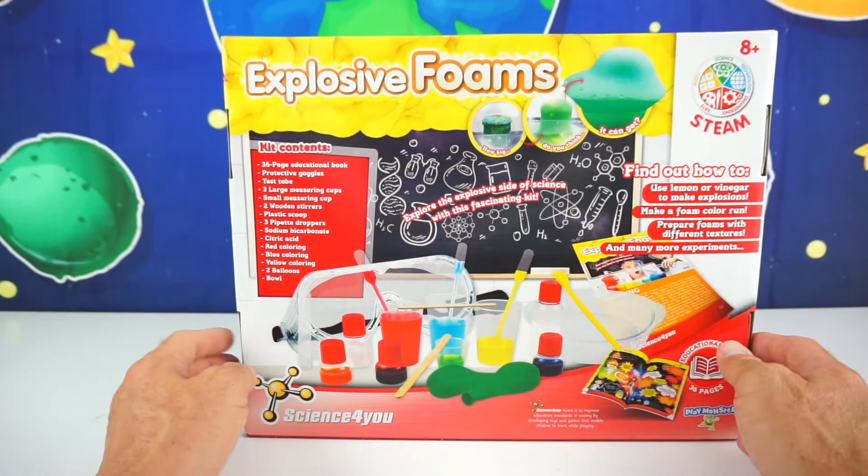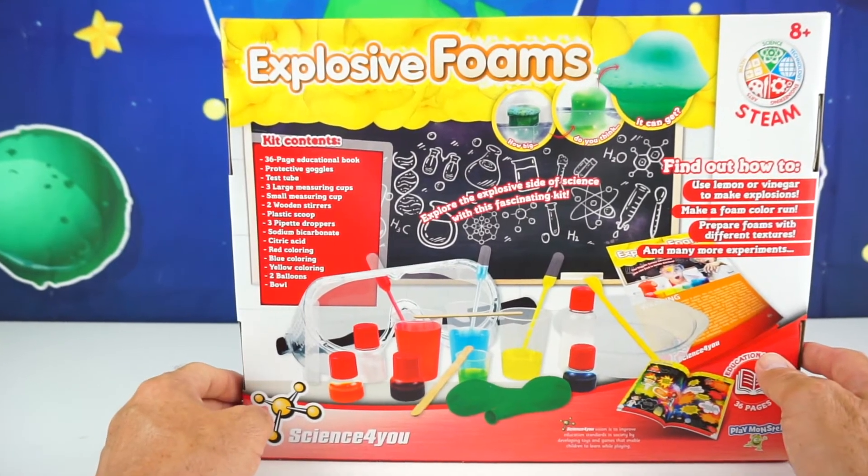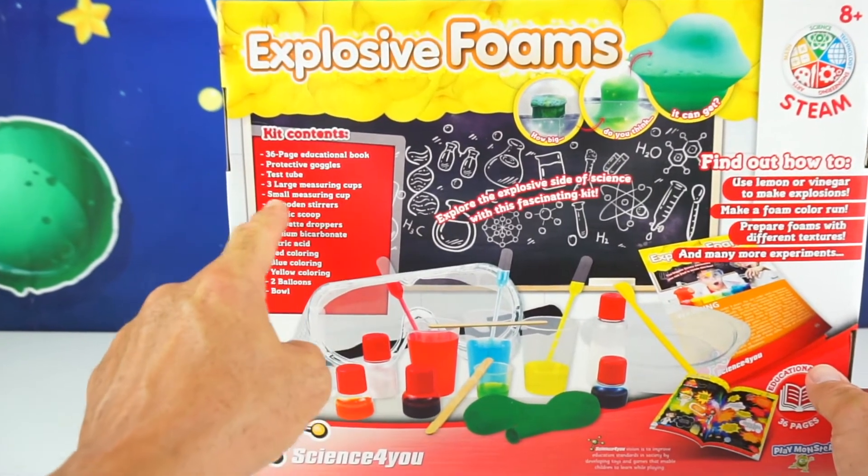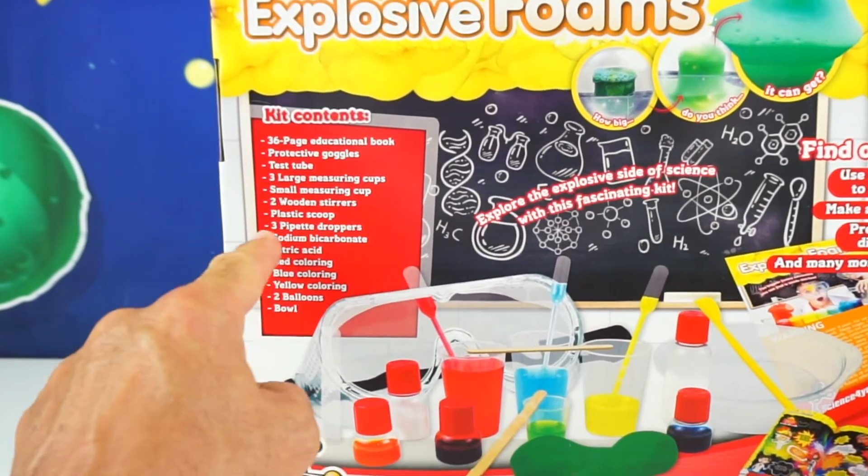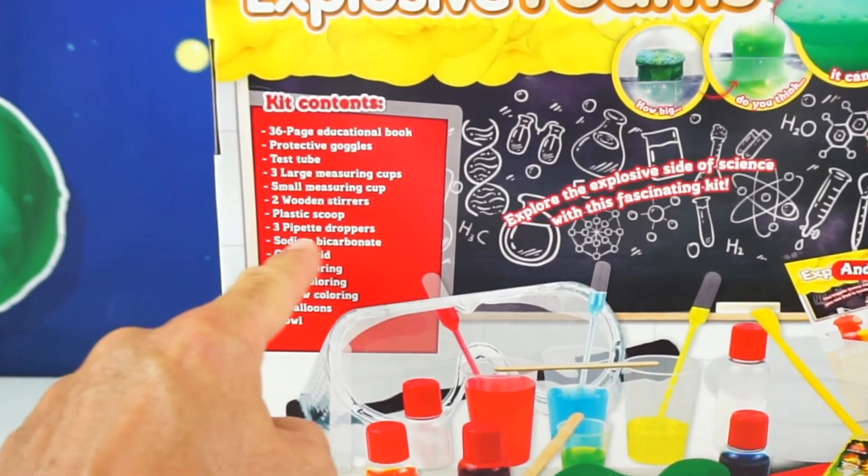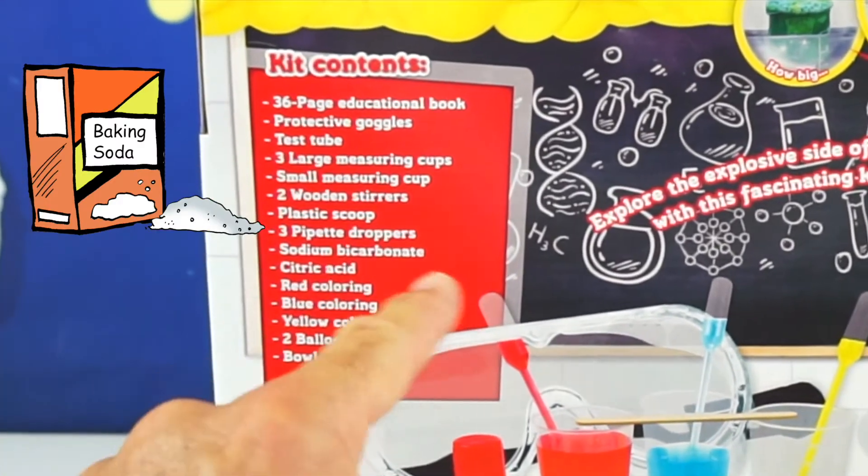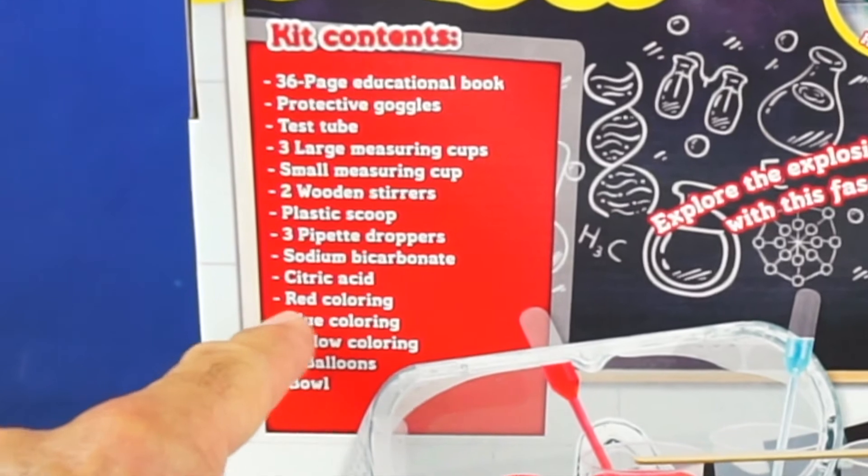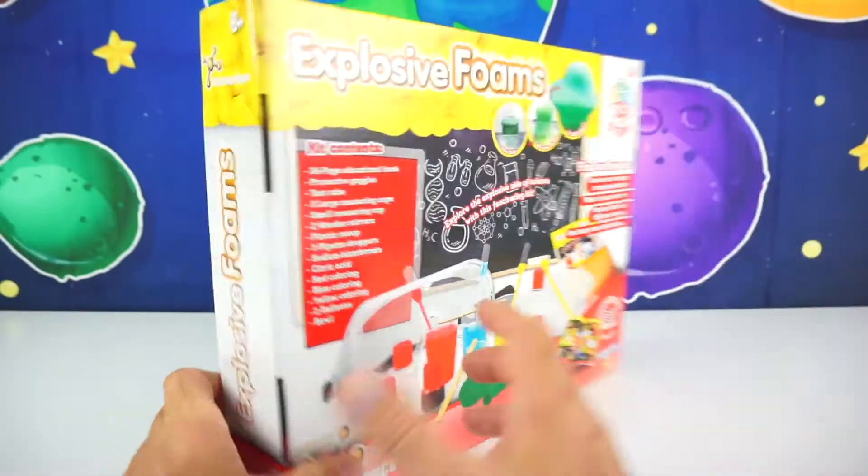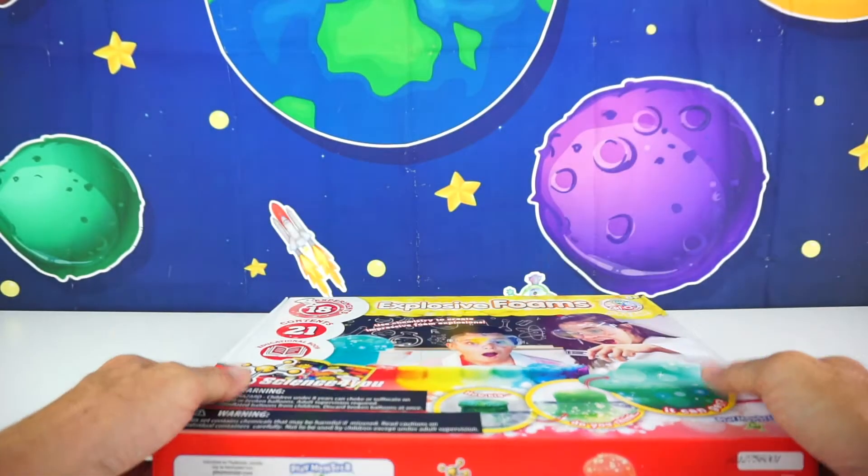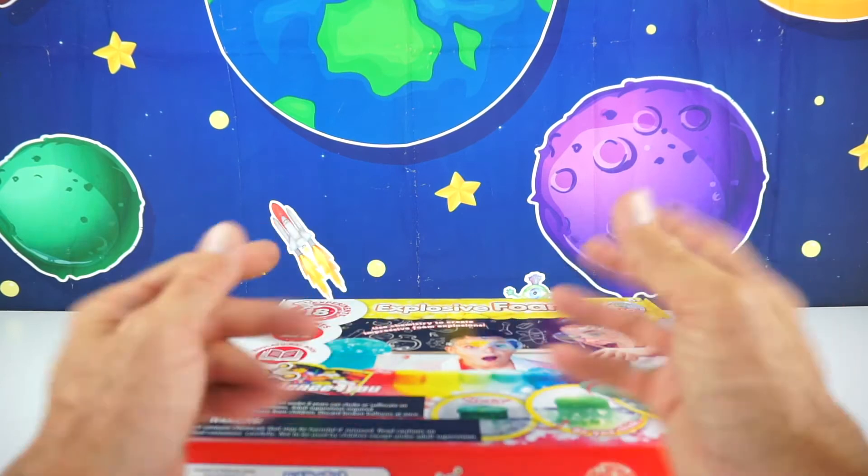And on the back of your explosive foams box it gives you the kit contents. 36 page educational book, protective goggles, test tubes, 3 large measuring cups, small measuring cups, 2 wooden stirrers, plastic scoop, 3 pipet droppers, sodium bicarbonate which is also baking soda, and citric acid, red coloring, blue coloring, yellow coloring, 2 balloons, and a bowl. And some of the experiments may need some additional contents like dish soap and stuff like that.